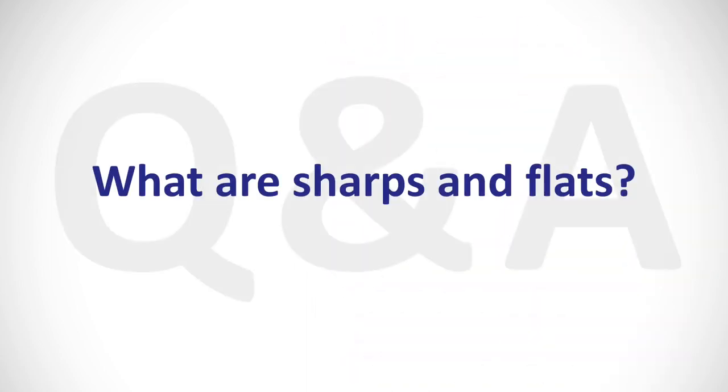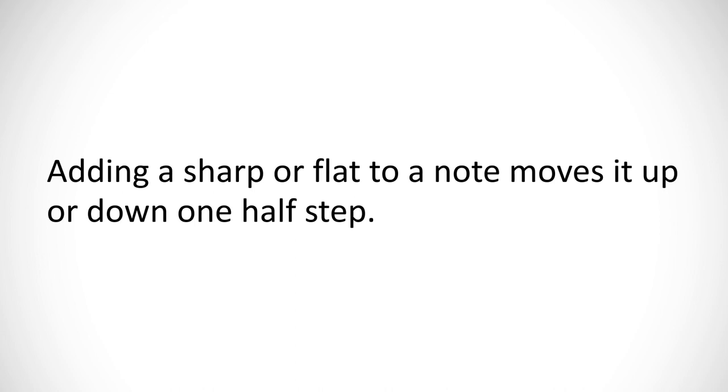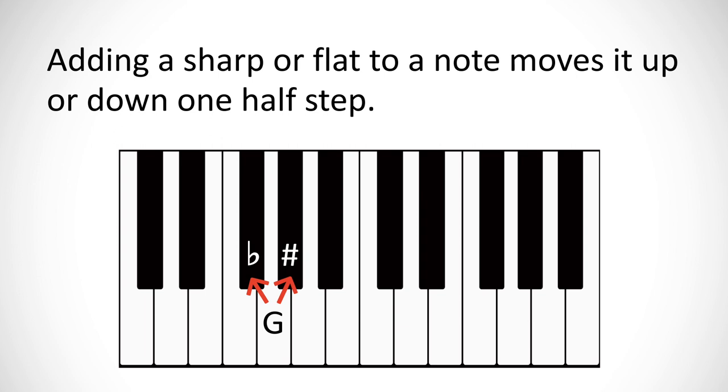In short, sharps and flats are symbols called accidentals that we add in front of a given letter named note to move it one half step, or one piano key if you're a visual person, higher or lower than what that letter name would normally give you.